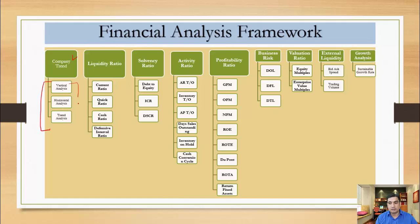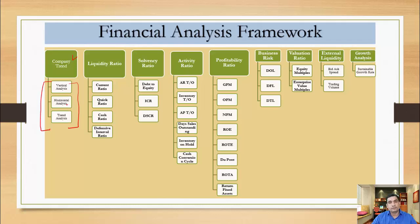When we calculate vertical analysis, horizontal analysis, or trend analysis, we are looking at the same thing from a different perspective. In vertical analysis, we calculate every item of the income statement as a percentage of sales, and every item of the balance sheet as a percentage of total assets or total liabilities and equity. In horizontal analysis, we look at the trend over a period of time.